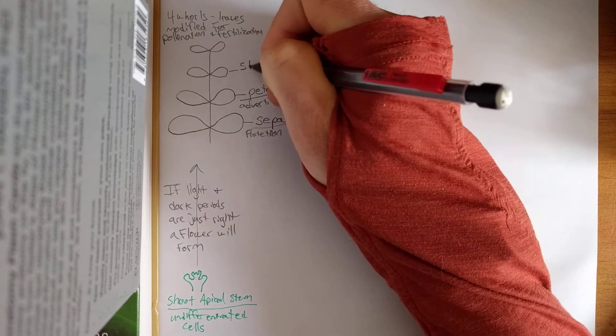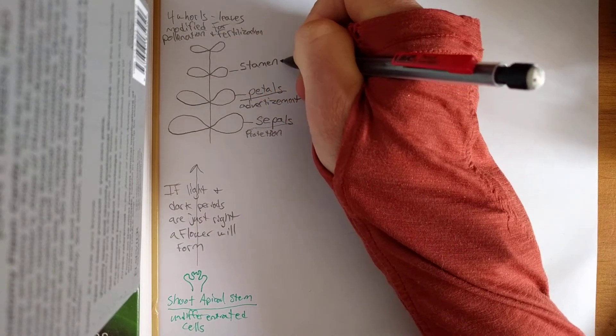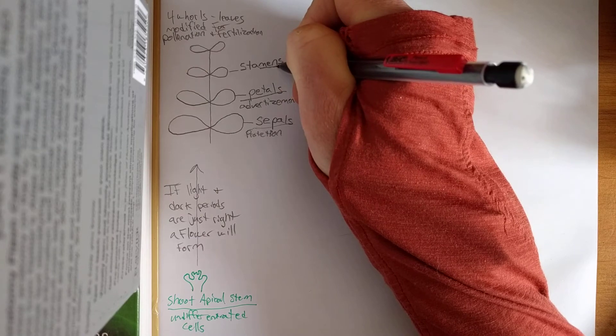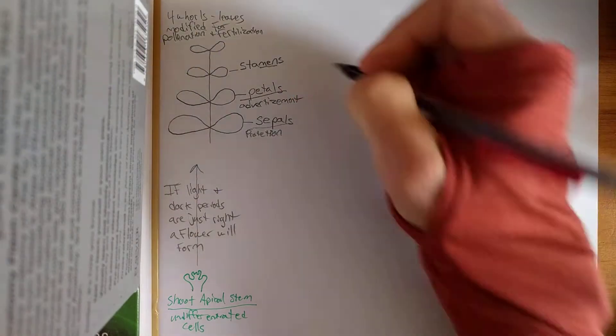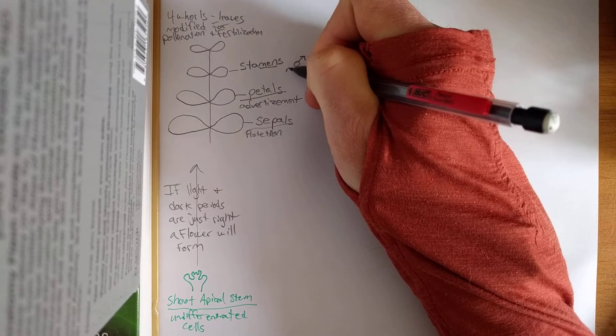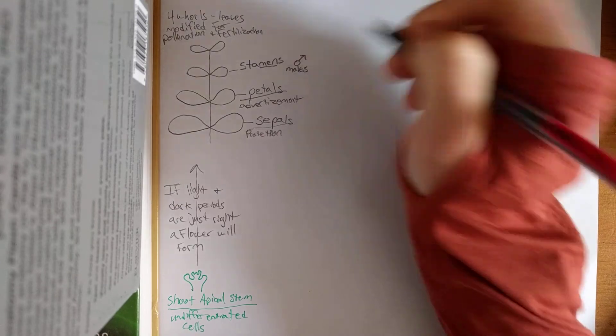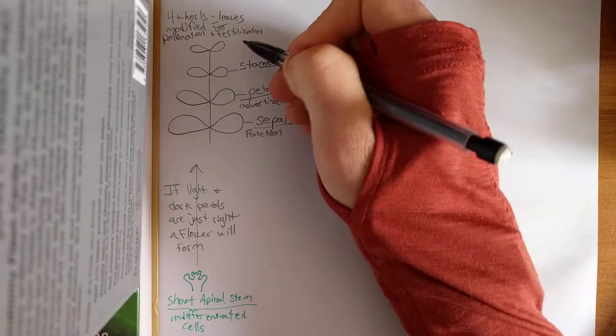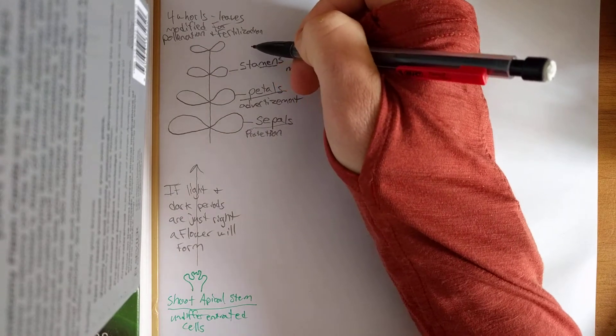Next layer up are the stamens. Stamen. You see the word men in there. These are the male reproductive organs which will create that pollen.